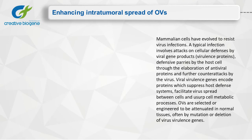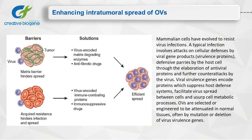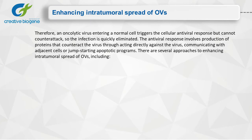Mammalian cells have evolved to resist virus infections. A typical infection involves attacks on cellular defenses by viral gene products and virulence proteins, defensive responses by the host cell through the elaboration of antiviral proteins, and further counterattacks by the virus. Viral virulence genes encode proteins which suppress host defense systems, facilitate virus spread between cells, and usurp cell metabolic processes. Oncolytic viruses are selected or engineered to be attenuated in normal tissues, often by mutation or deletion of virus virulence genes. Therefore, an oncolytic virus entering a normal cell triggers the cellular antiviral response but cannot counterattack, so the infection is quickly eliminated.